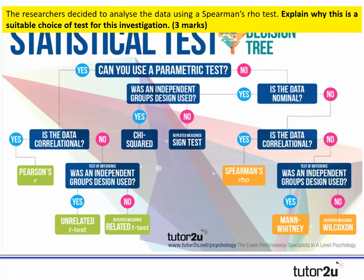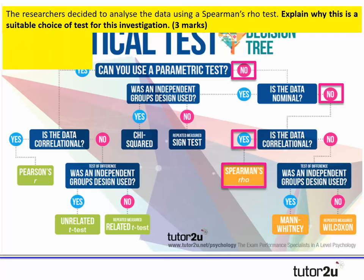What I like about the decision tree is that it enables you to work backwards. If we know we've got Spearman's rho, we know it's a correlational set of data, it's not nominal data, and it's a non-parametric test. This allows us to justify the test by saying it's correlational, the data would be ordinal, and Spearman's rho has been used. In this particular case, I believe it was a matched-pairs design used in that scenario.